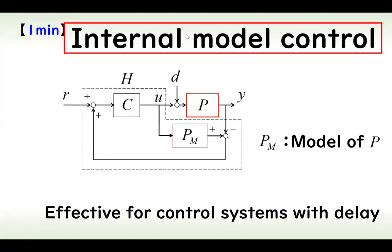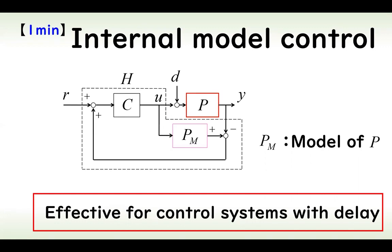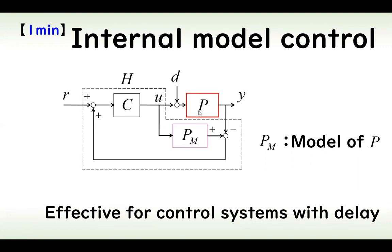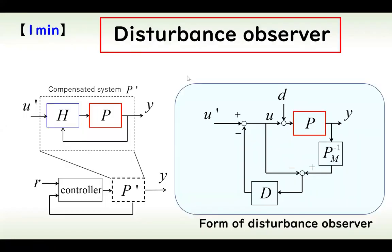In internal model control, the controller form uses P as the plant, PM as the model of the plant, and C as the controller. This form is effective for control systems with delay. If both the plant and PM have delay, the effect of delay can be cancelled by this feedback loop.